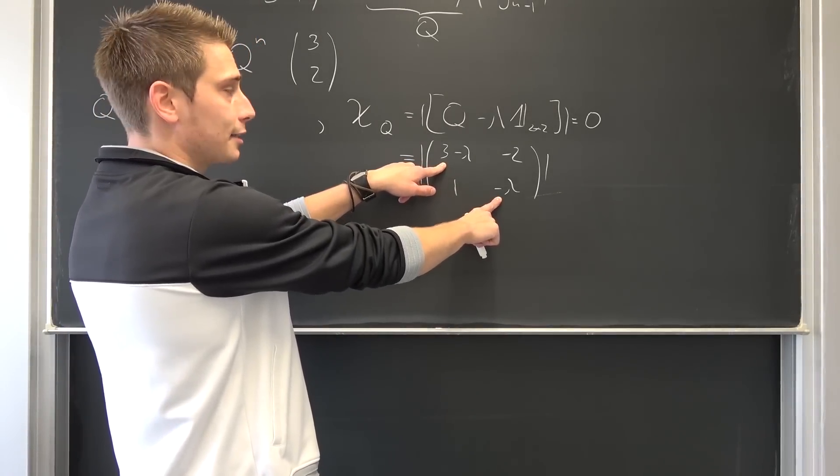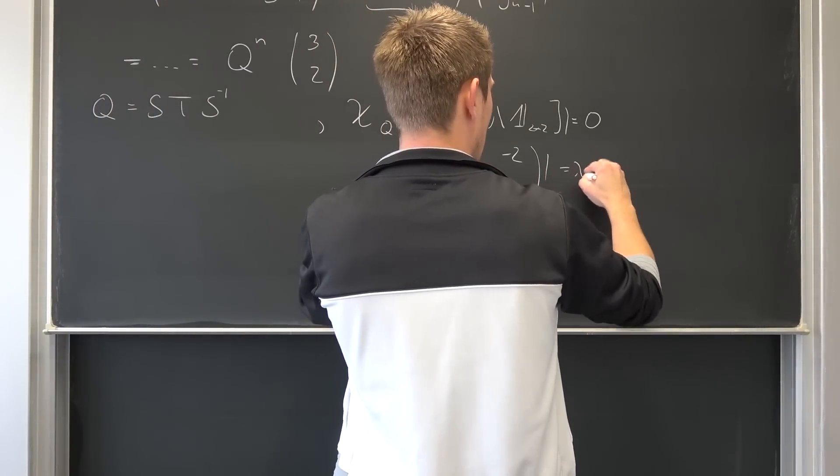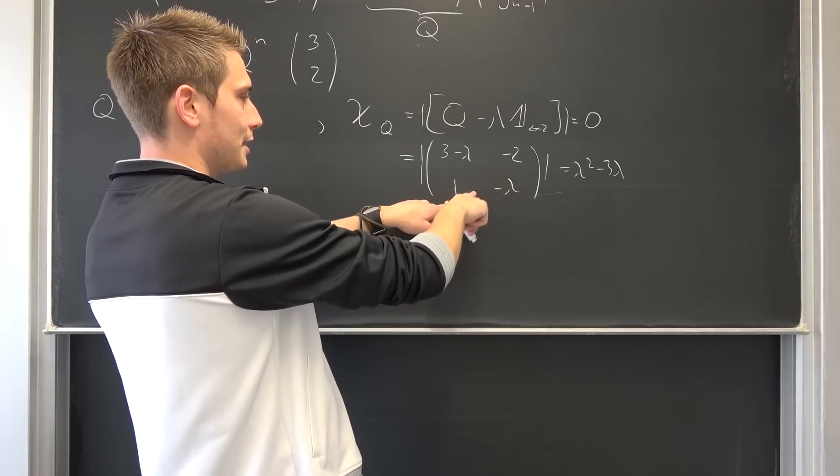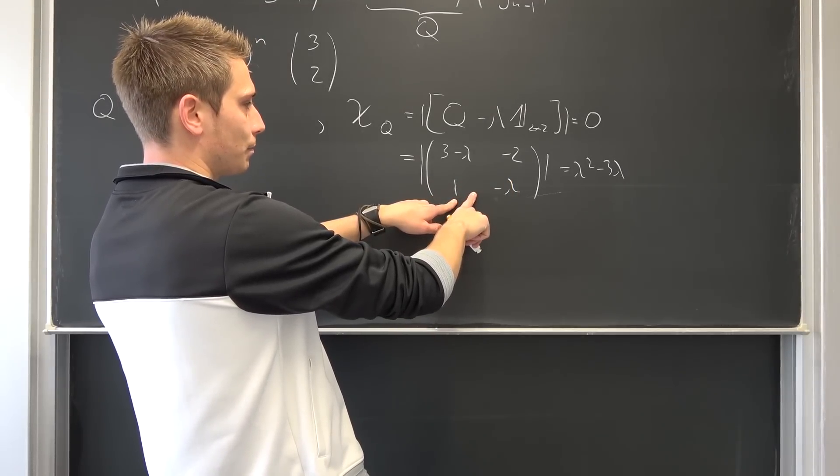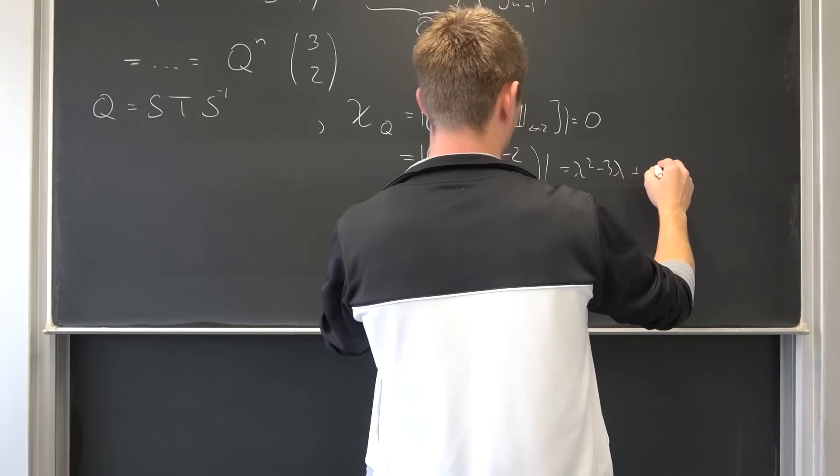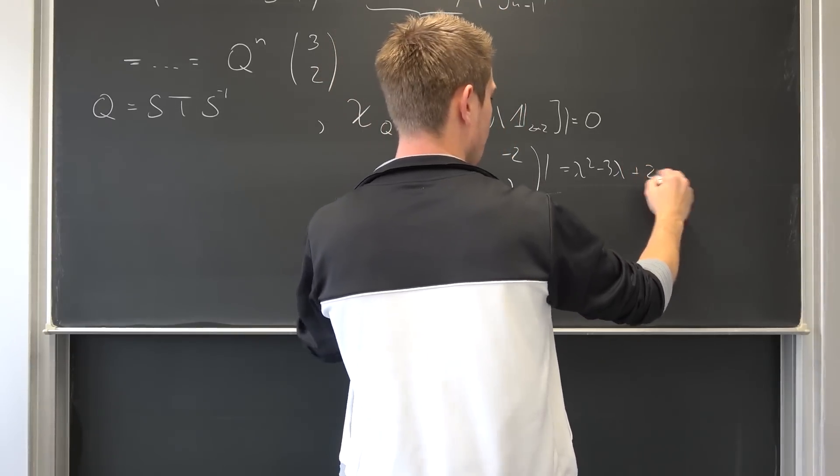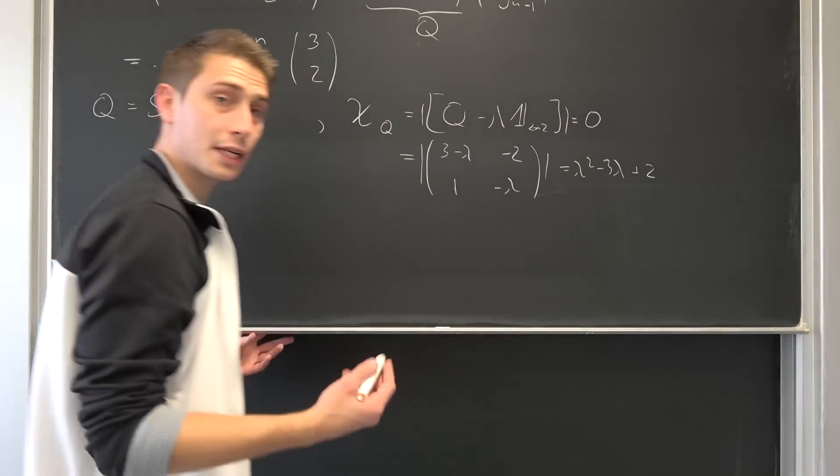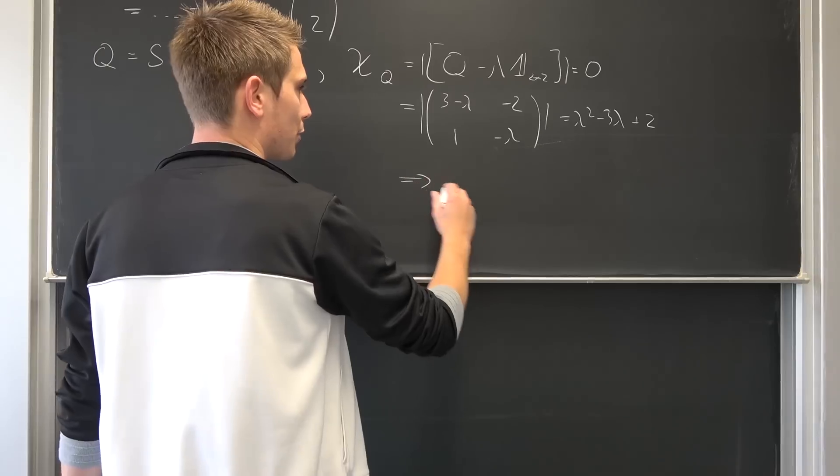Now, multiplying those together, taking the determinant is going to leave us with lambda squared and then negative 3 lambda, and then negative and negative becomes positive. So positive 2. Exactly. Now we want this to be equal to 0, meaning we can actually solve this using the quadratic formula.